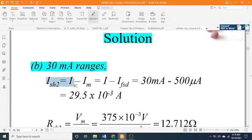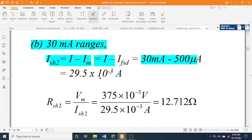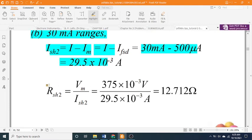Ish2 equals I minus Im equals I minus FSD equals 30 milliamps minus 500 microamps equals 29.5 times 10 to the minus 3 amps. Rsh2 equals Vm divided by Ish2 equals 375 times 10 to the minus 3 volts divided by 29.5 times 10 to the minus 3 amps equals 12.712 ohms.